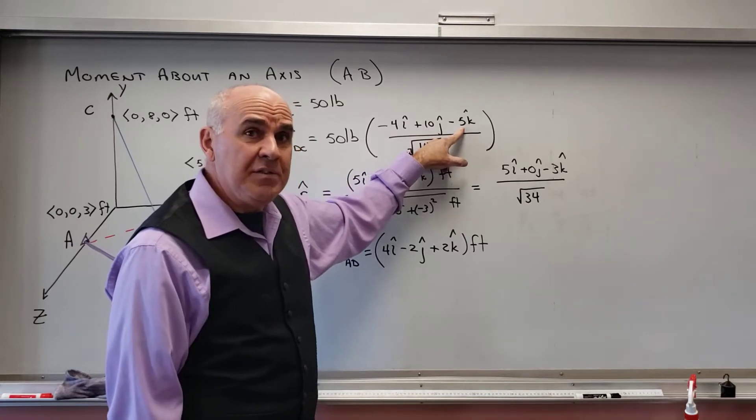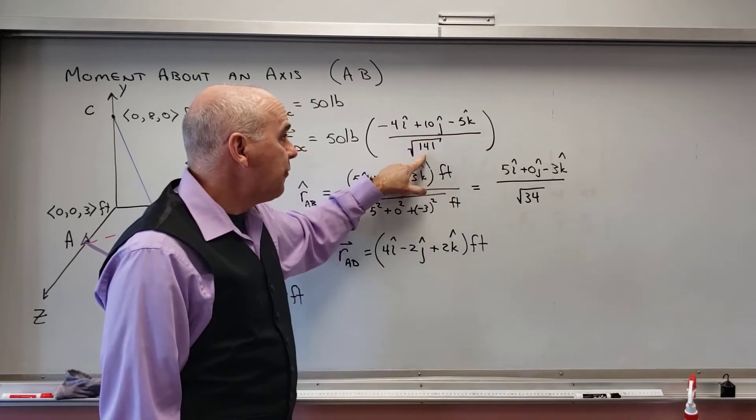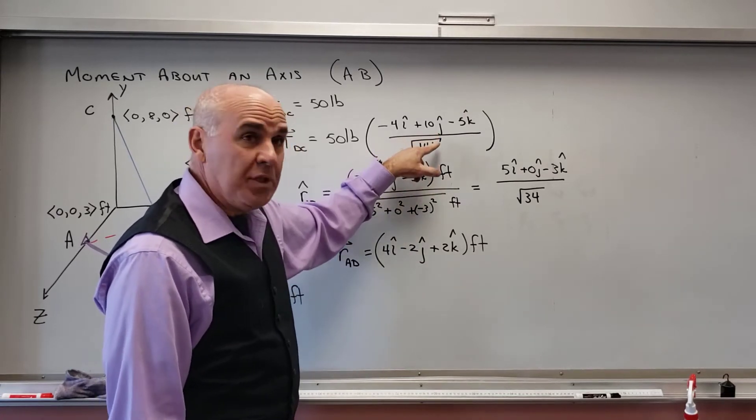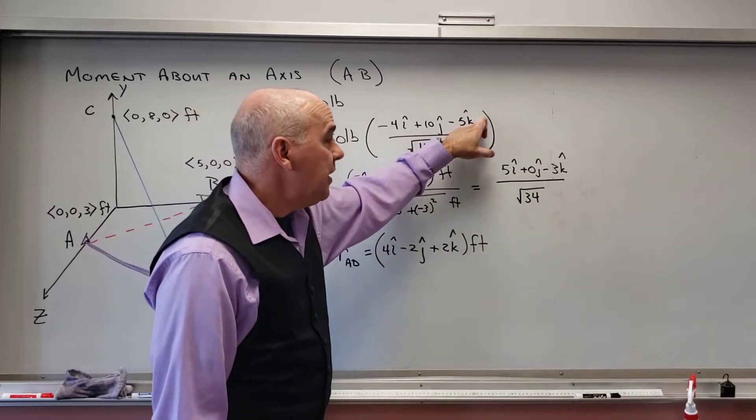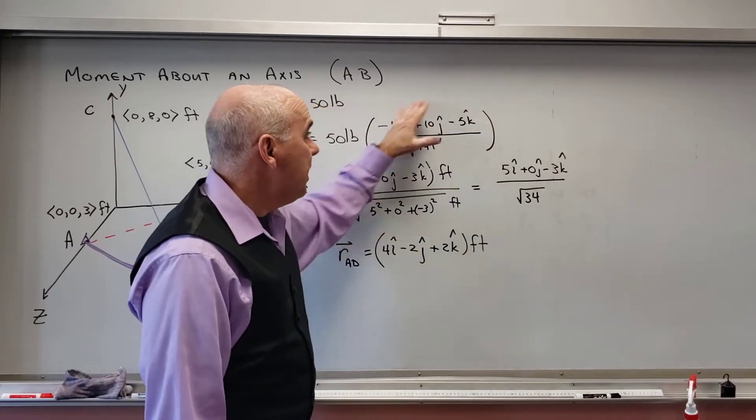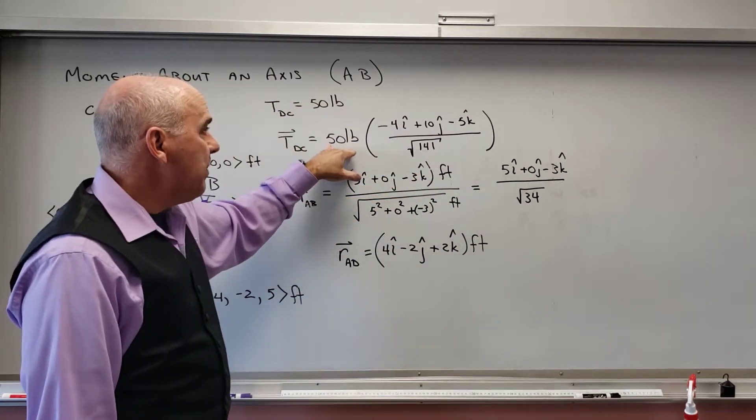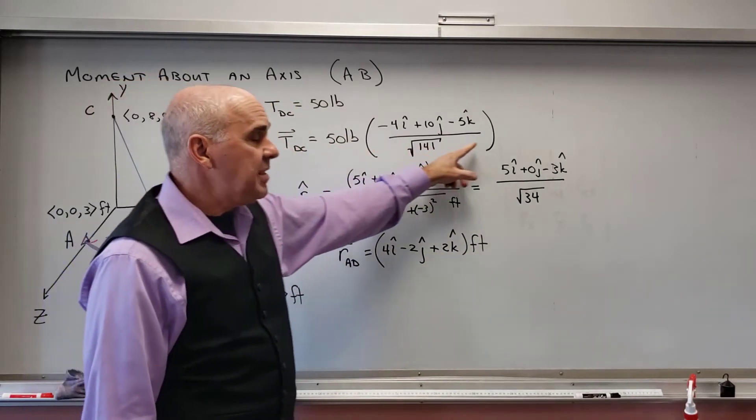So it's 116 plus 25. I get 141, and that would be feet squared. But then I take the square root of that. So I'm going to get feet down here, feet up here, the feet will cancel out. So this is dimensionless, like there are no units there. And then I multiply that by 50 pounds. So this is my tension.